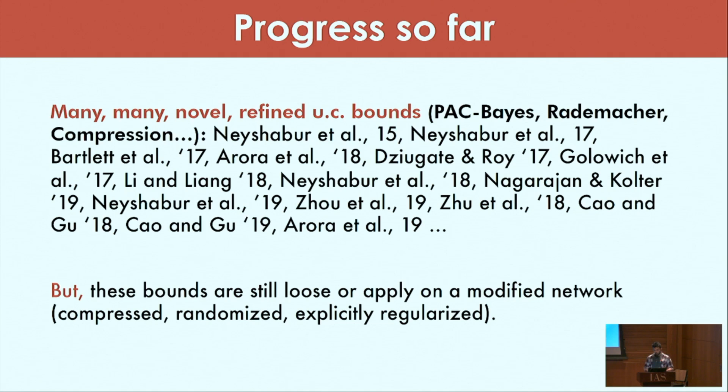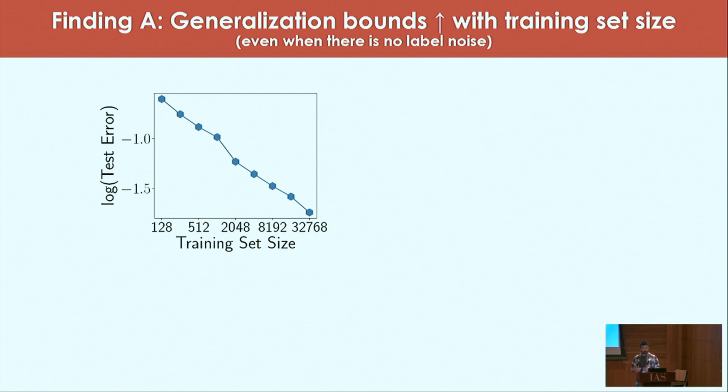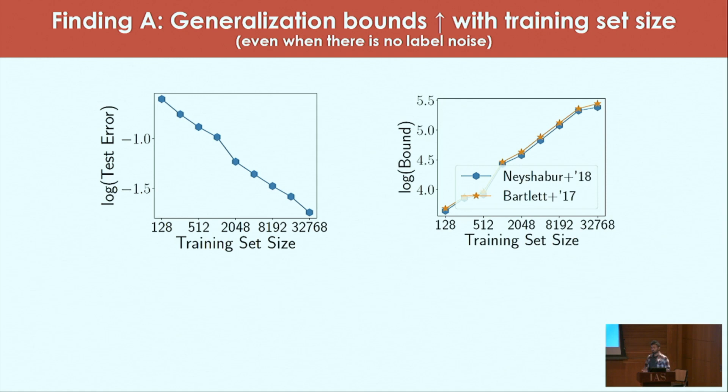In this talk we highlight two other issues. Our first finding is that there are cases in deep learning where the test error improves with the training set size, as expected, but at the same time the generalization bounds themselves increase with the training data set size. This happens even when there is absolutely no label noise.